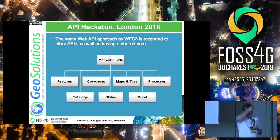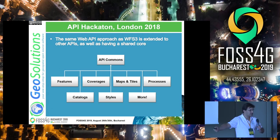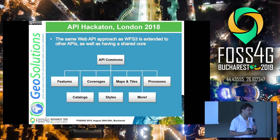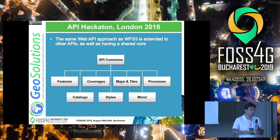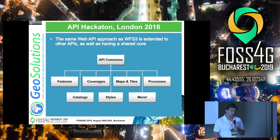Then came the API hackathon in London 2019, a couple of months ago. People involved tried to apply the same principles as WFS3 to all other specifications — features, coverages, maps and tiles, processes, catalogues, styles, and more. This resulted in API commons. Just like all the old OGC services had OWS common as the base, these new ones will have an OGC API commons specification on which all the others are based. It was a couple of days of going back and forth on limits, problems, new features wanted in all the specs, and a bit of prototyping.